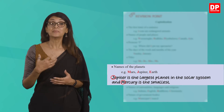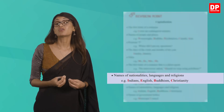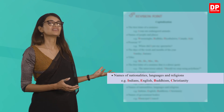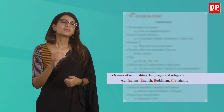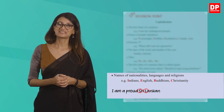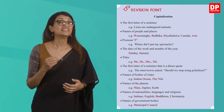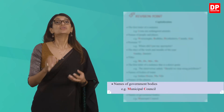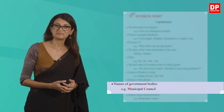You should use capital letters when you state names of nationalities, languages, and religions. Examples from your book include Indians, English, Buddhism, and Christianity. In a sentence: 'I am a proud Sri Lankan' — the S and L in Sri Lankan are capitalized, and of course the sentence starts with a capital I. Finally, the last point in the revision is names of government bodies — you will most definitely have to capitalize the first letter, for example, Municipal Council.